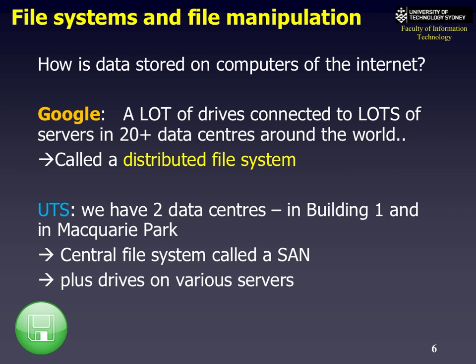At UTS we've split ours into two, where we have two data centers: one in the tower and one in a place called Macquarie Park in Sydney. Typically we put our files into a central system called a storage area network or SAN — sometimes that's called a NAS, which stands for network accessible storage — and drives on various servers out there. Let's take a quick look at UTS.